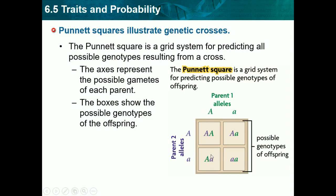For this box here, it would be this A and that A. For this box, it would be this lowercase a and that capital A. For this, it would be this lowercase a and that lowercase a. What these four boxes tell us is what the possible children could have — what their alleles are. In this first square, they have both dominant alleles, meaning it's a purebred — it has either both capital or both lowercase, so it would be homozygous, and since it's a capital A, it means it's dominant.